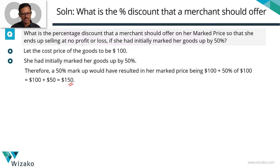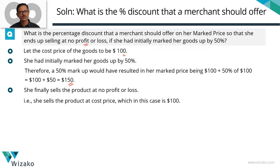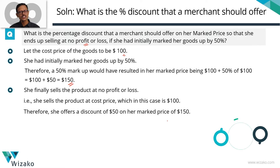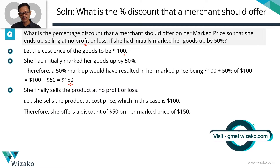If she's selling at no profit, no loss, then she should be selling it at the cost price. Her cost price is $100. So she marked it up to $150 and finally wants to sell it at $100. The dollar value of the discount she's going to offer is $50. This $50 discount is offered on a marked price of $150.